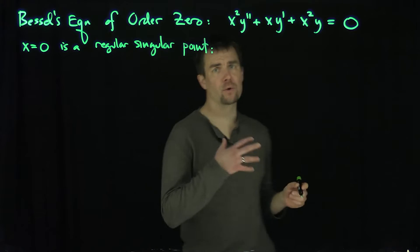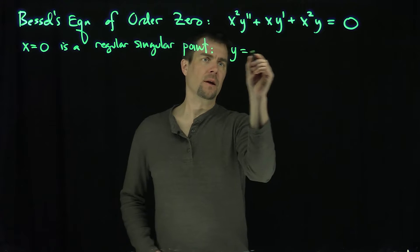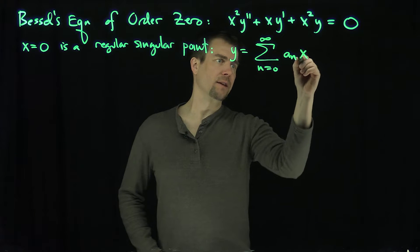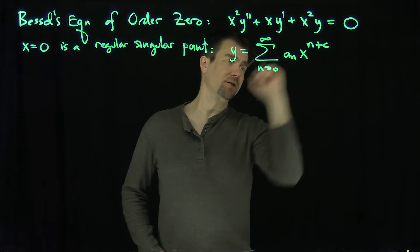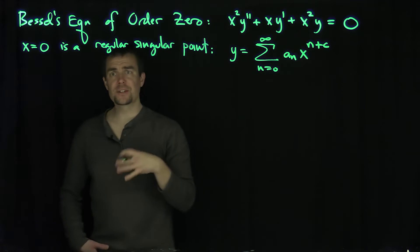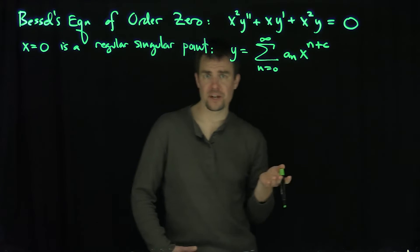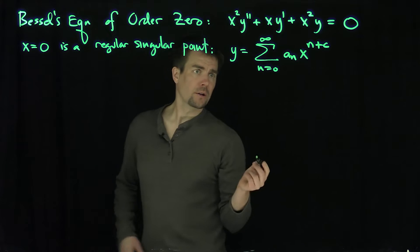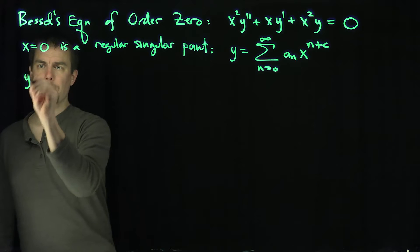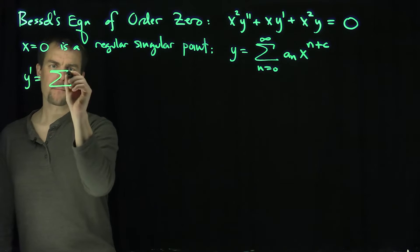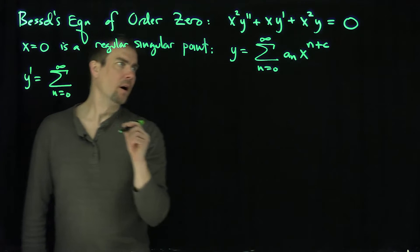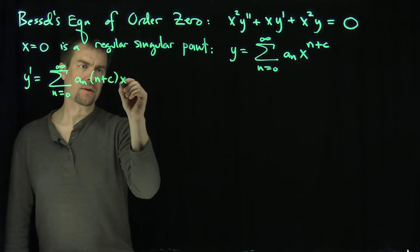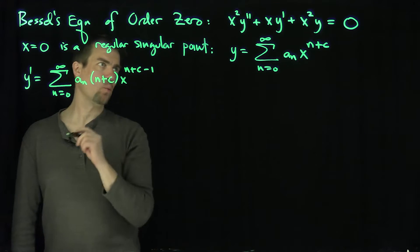We know how to handle regular singular points. What we do is write y as the sum from n equals 0 to infinity of a_n times x to the n plus c, where c is a constant. Then c is going to satisfy some quadratic equation called the indicial equation. So the first derivative y prime is the sum from n equals 0 to infinity of a_n times (n plus c) times x to the n plus c minus 1.